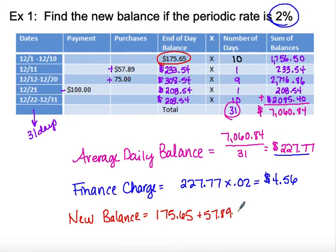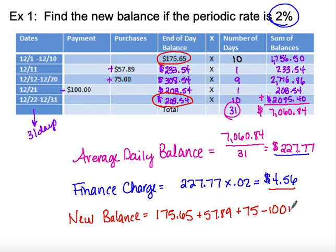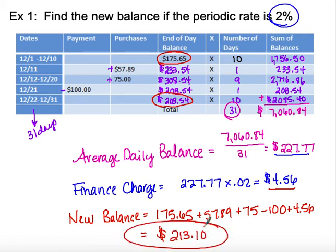We're adding $57.89, adding $75.00, and subtracting $100.00. This is where we should end up when we do all of that. Then the last thing is to add on the finance charge of $4.56, so our new balance is $213.10.